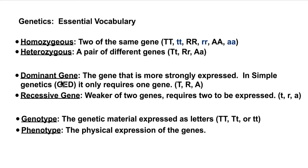Which brings us to the next pair. You have a dominant gene, which is the gene that is more strongly expressed. In simple genetics on the GED, it only requires one gene, such as a big T, big R, or big A in the examples here. The recessive gene is the weaker of the two genes, which means it requires two of them to be expressed.